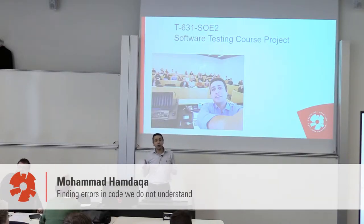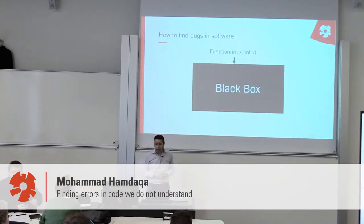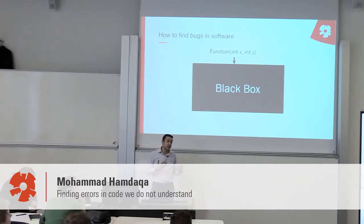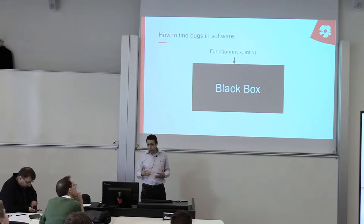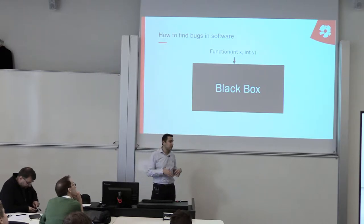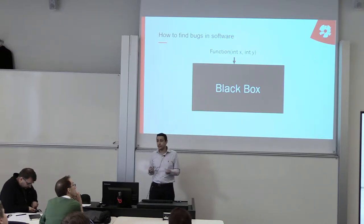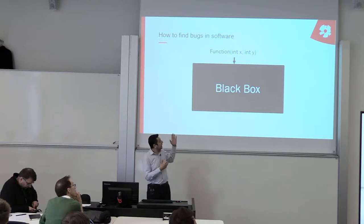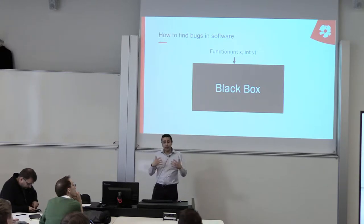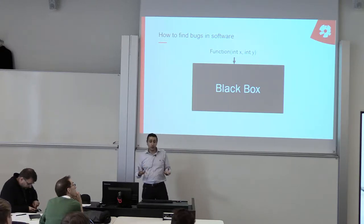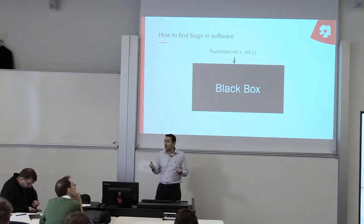Today is about the course project of the software testing. Since we're talking about software testing, you may ask how to find bugs in a software. There are different ways to tackle this. One way is to look at the software as a black box and look at the input space of this black box, trying to analyze the inputs. For example, in this case, if we have two inputs for this application or program.